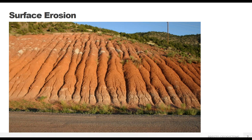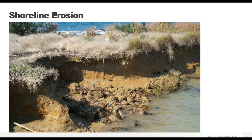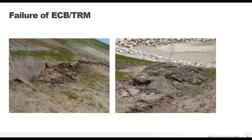Water flowing down the face of a slope originating from rain or sheet flow will cause rills and gullies. Shoreline erosion occurs when rivers, ponds and lakes create current or wave action that attacks the underlying soil. And finally, while not truly considered erosion, misapplying erosion control blankets or turf reinforcement mats can lead to slope surface failure and require installation of a more stable slope protection system.